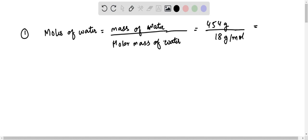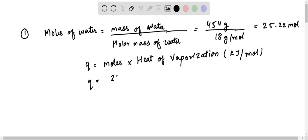This equals to 25.22 moles. So now we can say Q is nothing but Q equals to moles into heat of vaporization. It was in kilojoule per mole.